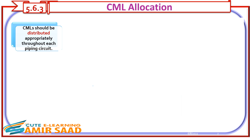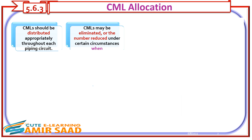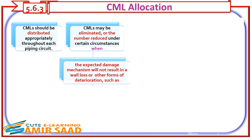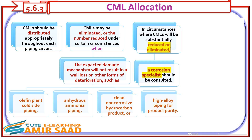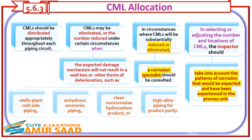CMLs should be distributed appropriately throughout each piping circuit. CMLs may be eliminated or the number reduced under certain circumstances when the expected damage mechanism will not result in wall loss or other forms of deterioration — such as olefin plant cold side piping, anhydrous ammonia piping, clean non-corrosive hydrocarbon product, or high-alloy piping for product purity. In circumstances where CMLs will be substantially reduced or eliminated, a corrosion specialist should be consulted. In selecting or adjusting the number and locations of CMLs, the inspector should take into account the patterns of corrosion that would be expected and have been experienced in the process unit.